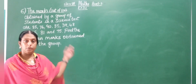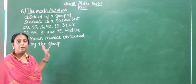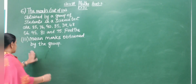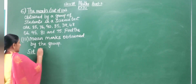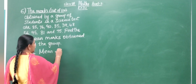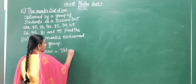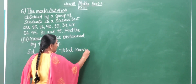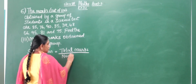The third part is the mean marks obtained by the students of the group. Mean equals total marks divided by number of students.